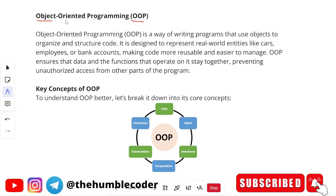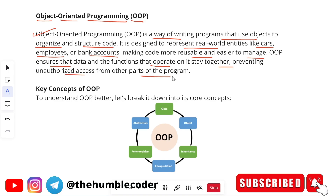The full form of OOP is Object Oriented Programming. OOP is a way of writing programs that use objects to organize and structure code. It is designed to represent real-life entities like cars, employees, or bank accounts, making code more reusable and easier to manage. OOP ensures that the data and the functions that operate on it stay together, preventing unauthorized access from other parts of the program.